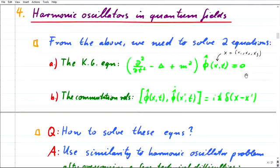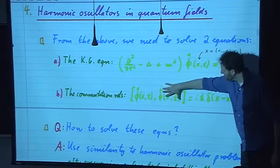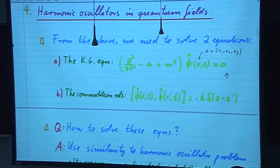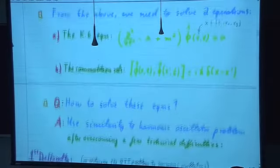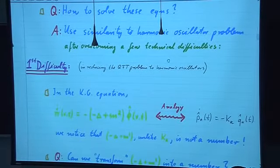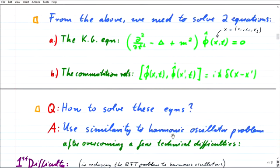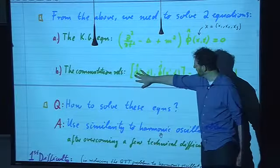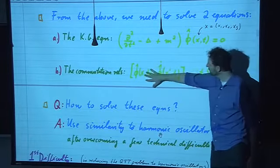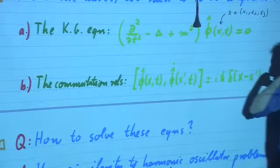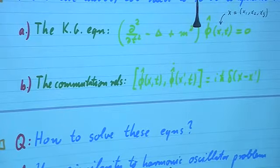From the above, apart from the Hermiticity condition, we have to solve two kinds of equations: the Klein-Gordon equation and the canonical commutation relations. How to solve these? We need to find mathematical objects that have non-trivial commutation relations. Clearly the phi cannot be number-valued — they have to be some sort of operator-valued. This is just a partial differential equation of the usual kind.